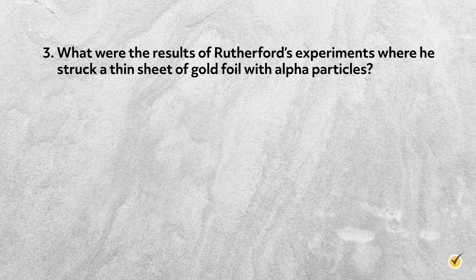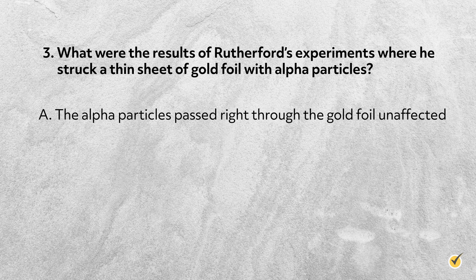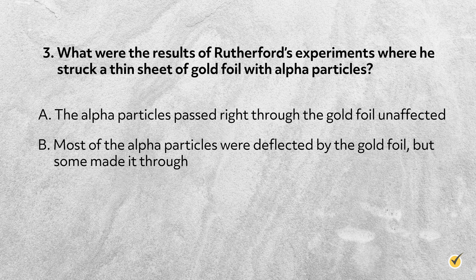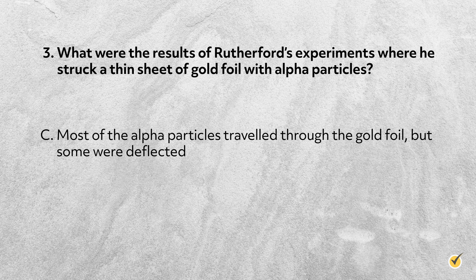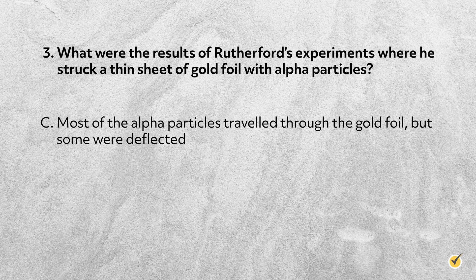Number three: what were the results of Rutherford's experiments where he struck a thin sheet of gold foil with alpha particles? A: the alpha particles passed right through the gold foil unaffected. B: most of the alpha particles were deflected by the gold foil, but some made it through. Or C: most of the alpha particles traveled through the gold foil, but some were deflected. The correct answer is C. Rutherford originally hypothesized that most of the alpha particles would pass straight through the gold atoms unperturbed. However, they discovered that while most did travel straight through, a small number were significantly deflected after hitting the nucleus. And that's all for this video. Thanks for watching and happy studying!